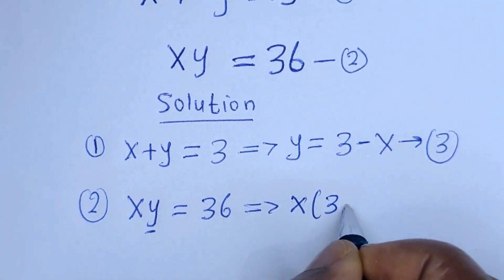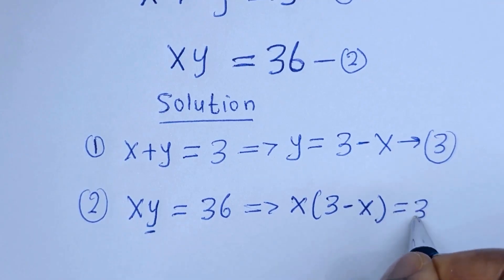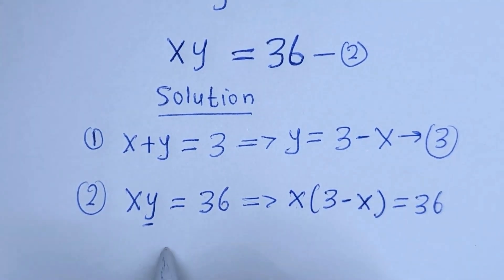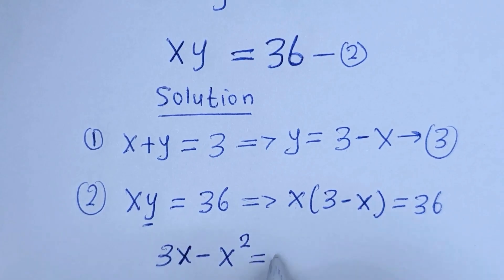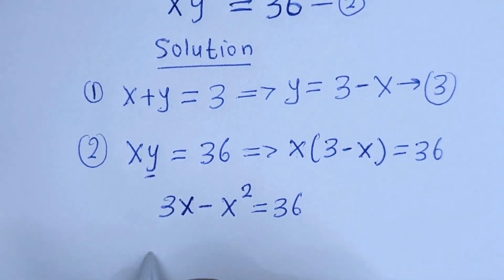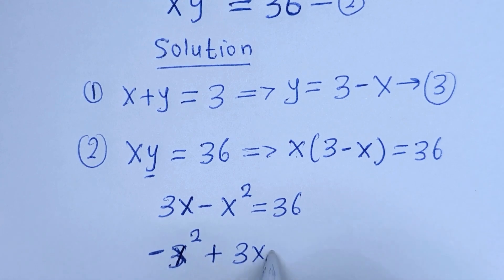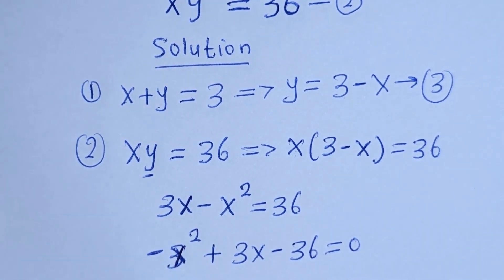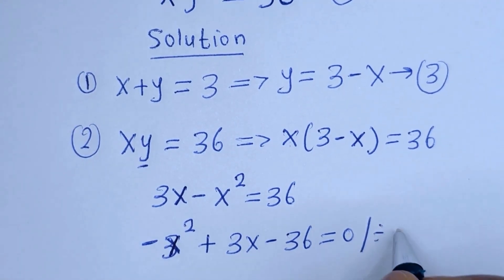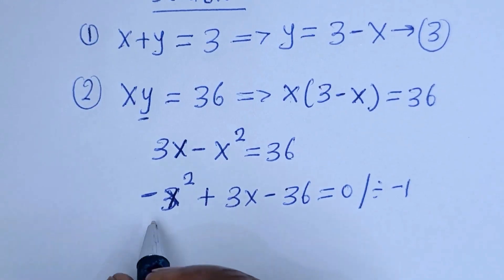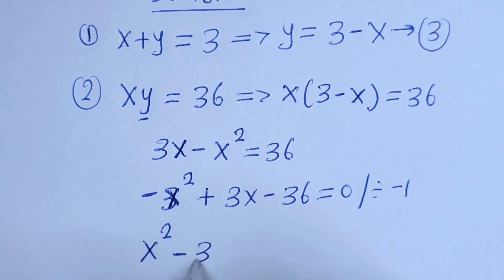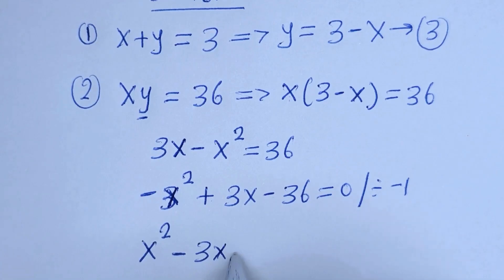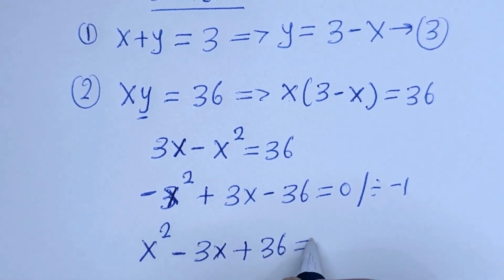S times (3 minus S) is equal to 36. Expanding: S multiplied by 3, that is 3S, minus S multiplied by S, which is S squared, is equal to 36. So we have negative S squared plus 3S minus 36 is equal to 0. Now let us divide the whole equation by negative 1, giving us S squared minus 3S plus 36 is equal to 0.